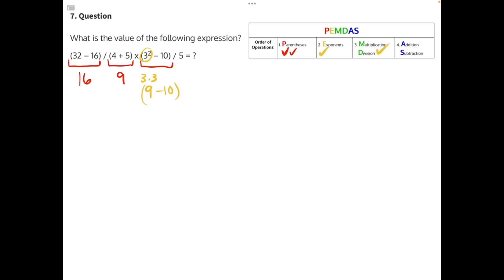We can then bring down the minus 10. There is no multiplication or division, but there is addition and subtraction. 9 minus 10 will give us negative 1.